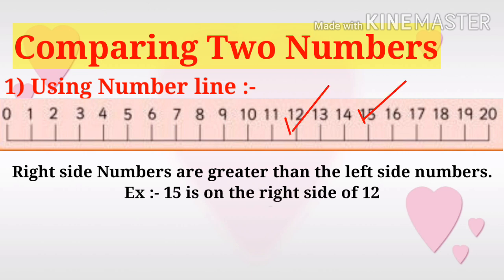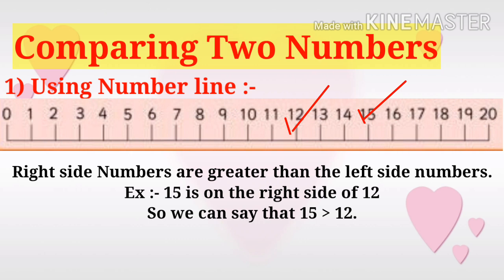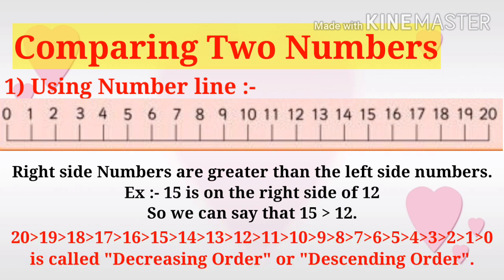Consider 15 and 12. 15 is at the right side of 12, so 15 is greater than 12. By generalization, we can say that 20 is greater than 19, is greater than 18, is greater than 17, and so on.